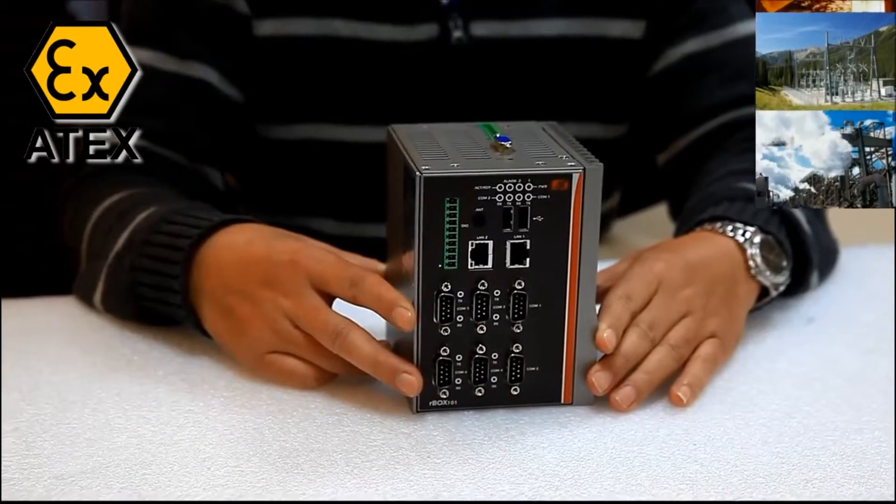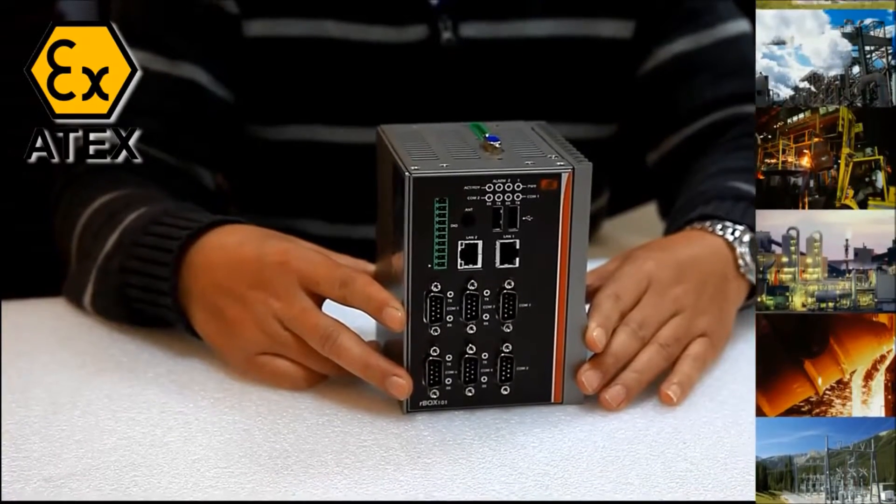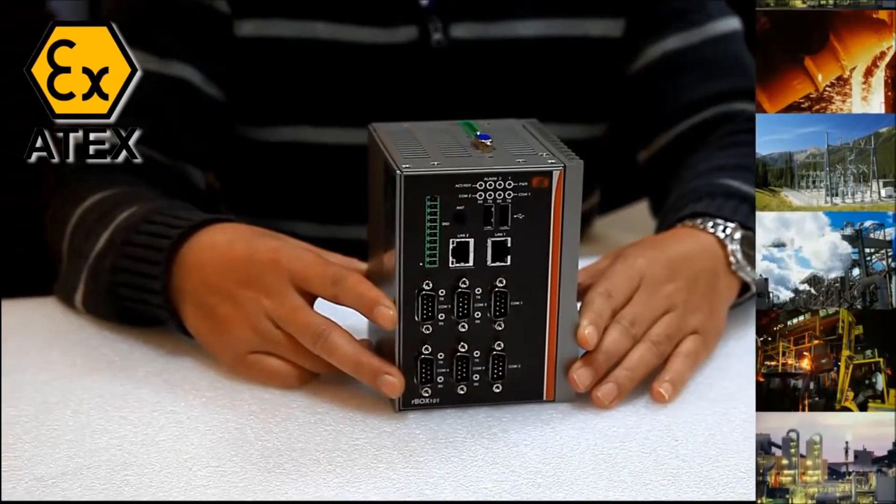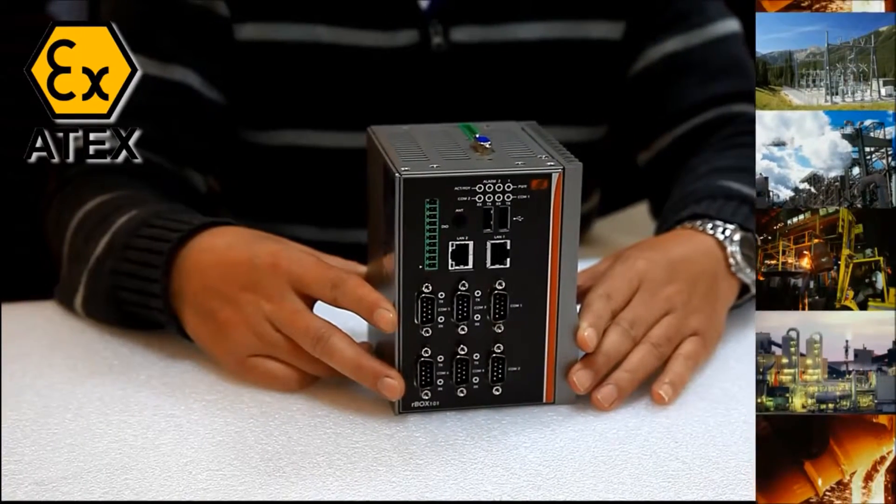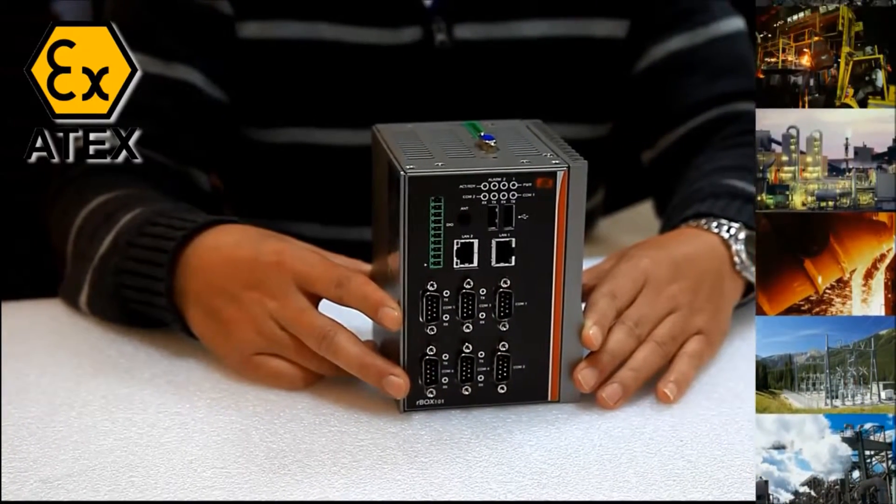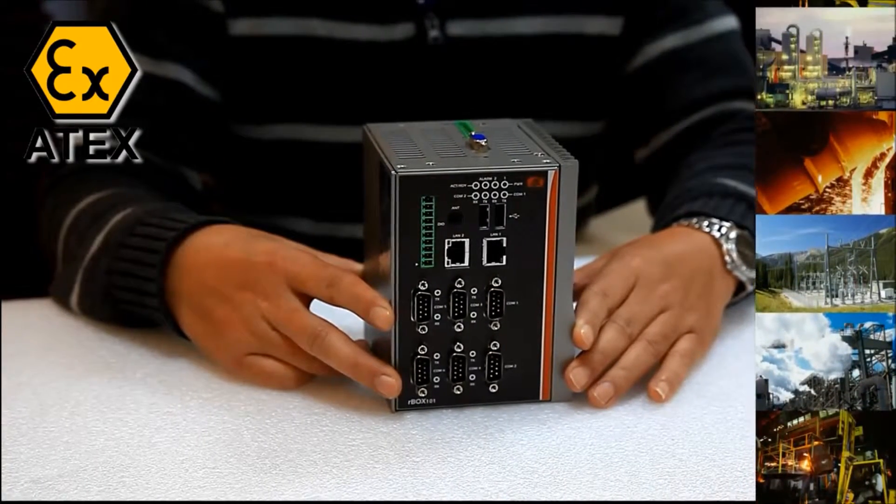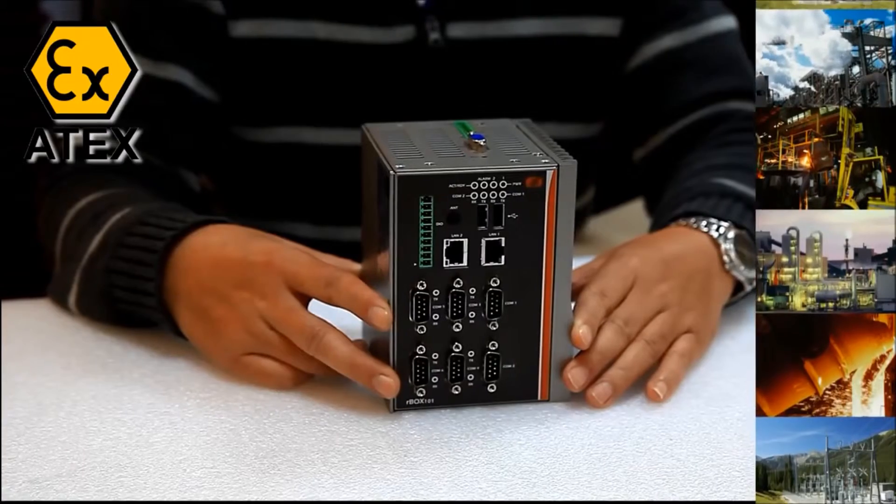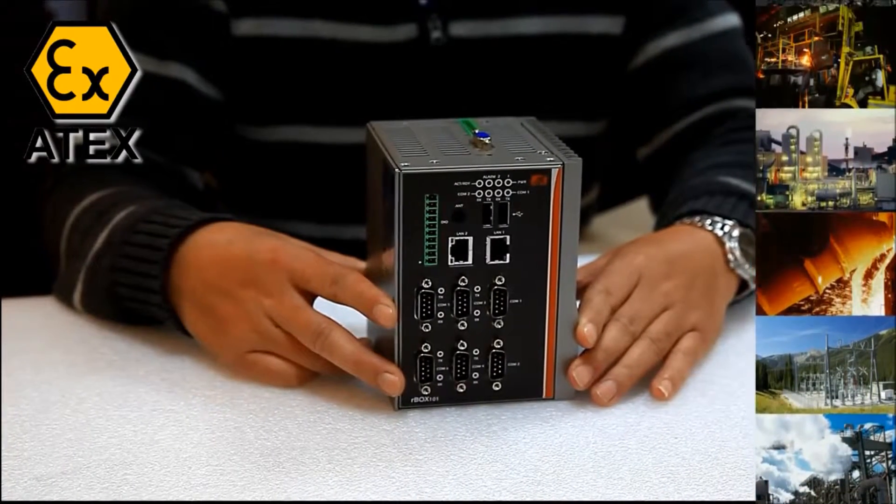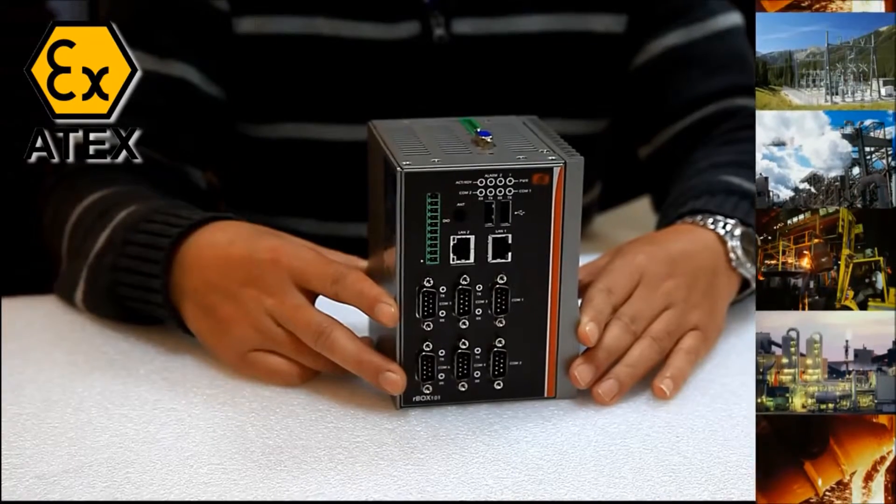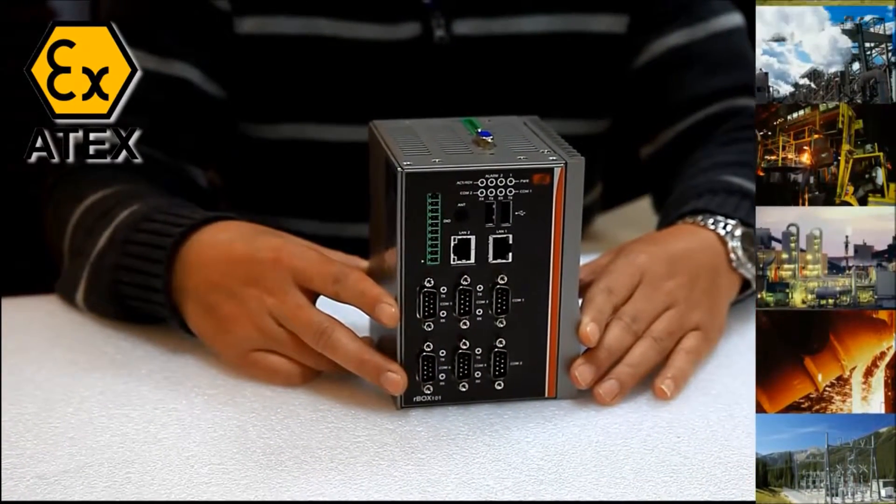With this ATEX anti-explosive certification, making it more reliable and stable in potentially explosive environments. It is intended for use in potentially explosive atmospheres in explosion-proof equipment. Under the international trade of IECS Mutual Certification System, RBOX-101-6COM with ATEX certificate also sells outside of Europe. The business opportunity is unlimited.